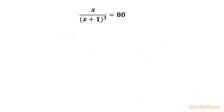Welcome back to Infigyan, my dear friends. In this video we have another very interesting question from algebra. The equation is x over (x plus 1) whole cube equal to 80, and we have to find out all possible solutions. Let us get started by noting that the denominator cannot be 0, so x cannot be negative 1.